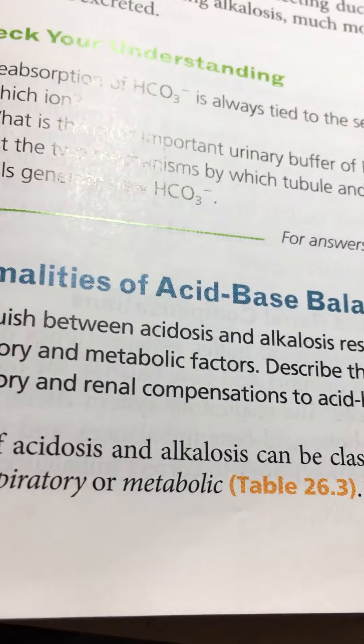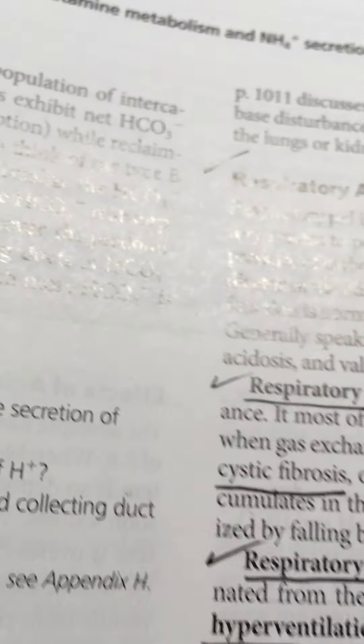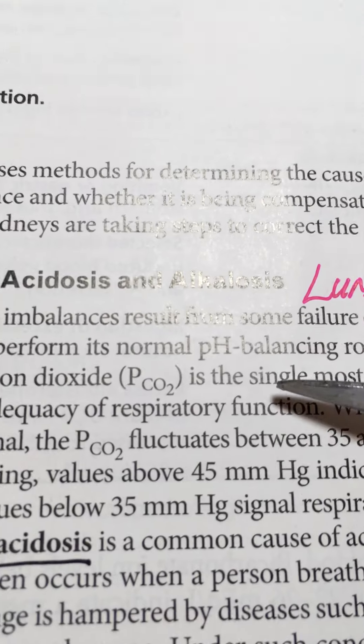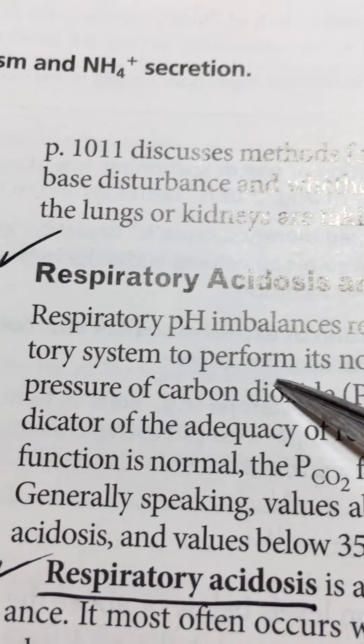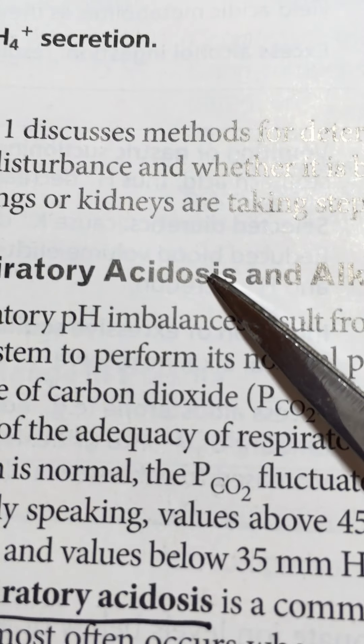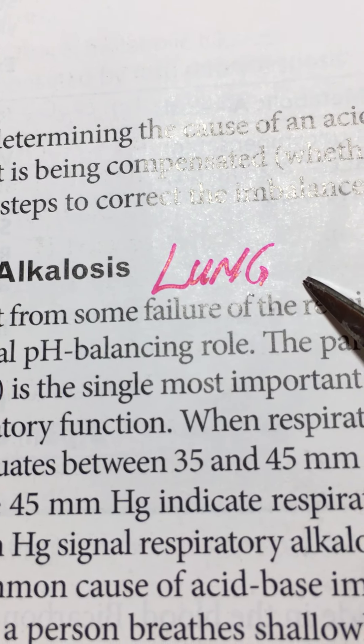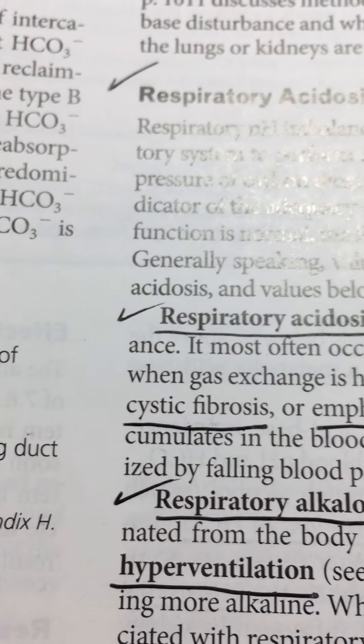Now let's move on to abnormalities of acid-base balance. The first thing we're going to look at is respiratory acidosis and alkalosis — meaning too much acid or too much alkalinity as a result of respiration at the lungs.